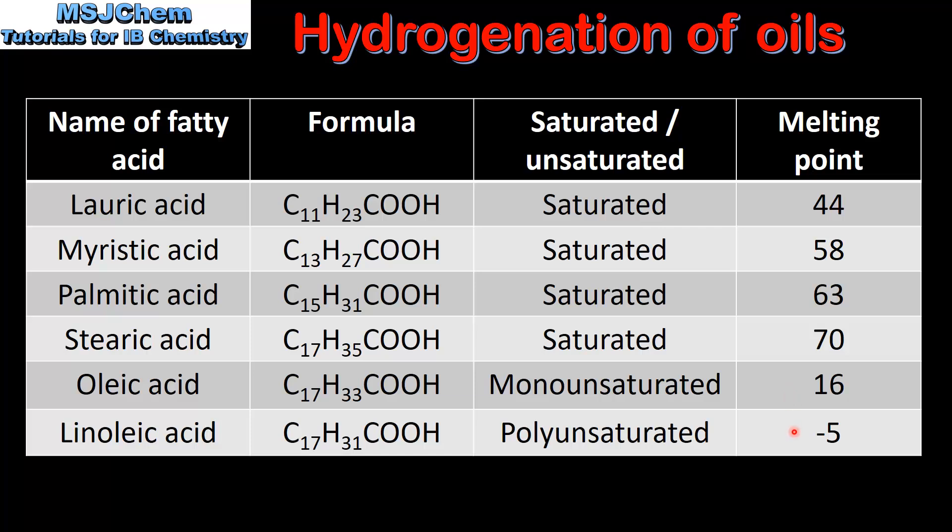The more carbon to carbon double bonds there are in a fatty acid, the less surface area there is between the molecules, the weaker the London dispersion forces, and the lower the melting point.